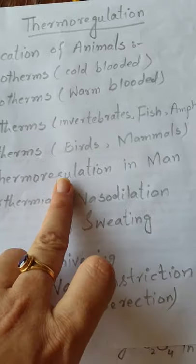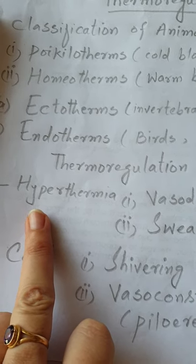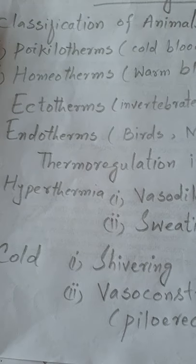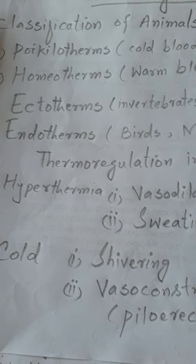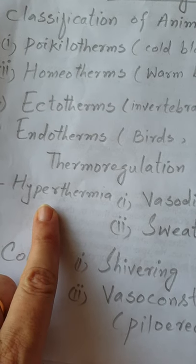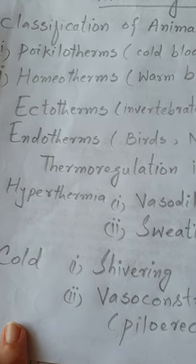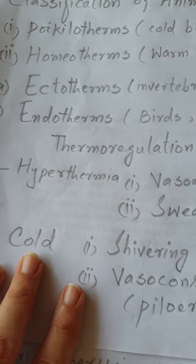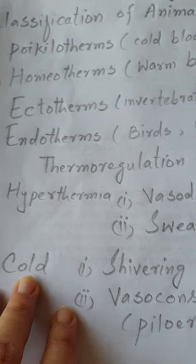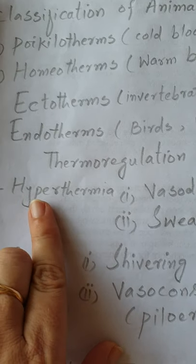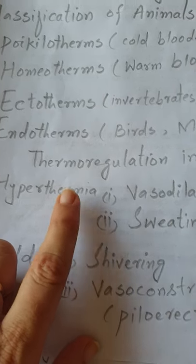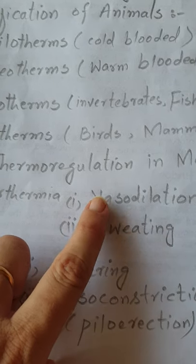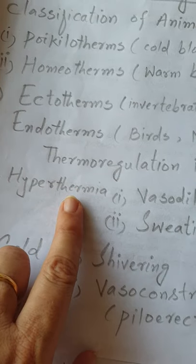Now we will discuss thermoregulation in humans — how humans control their internal temperature. Humans can face two types of changes in the external environment: one is hyperthermia, which is high temperature, and the second is cold, which is low temperature. Normal human body temperature is 37 degrees centigrade. When hyperthermia occurs — when the external temperature rises — two types of physiological changes occur in the body.